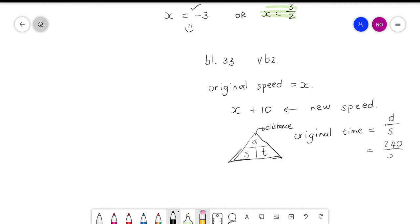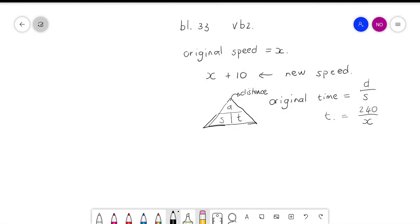And his original speed is x, so original time we can say is 240 over x. The time it will take to the point when he is finished, it's still 240 because the distance of the journey didn't change, but his new speed changed to x plus 10. Okay, and we know something else about the new time as well.